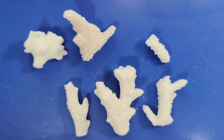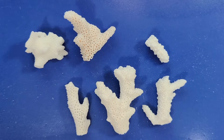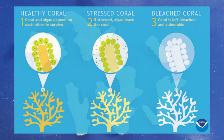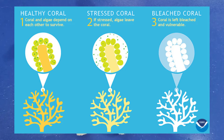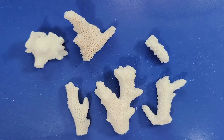Coral reefs are very delicately balanced, and they're very sensitive to changes in water temperature and light. When water is too warm, corals will expel the symbiotic algae living in their tissues. Because this algae gives coral its colors, without the algae the coral turns completely white, just like this coral skeleton.